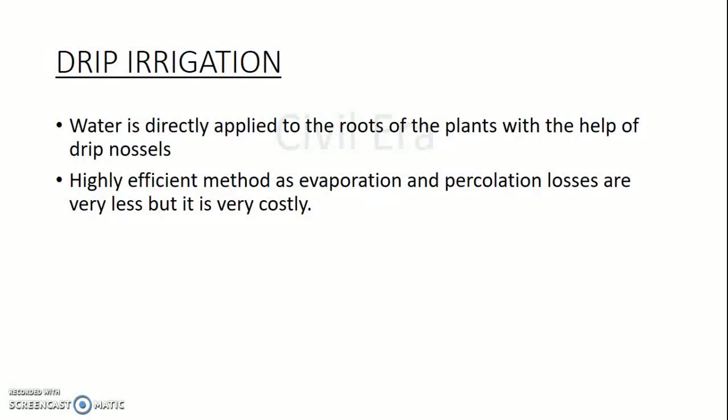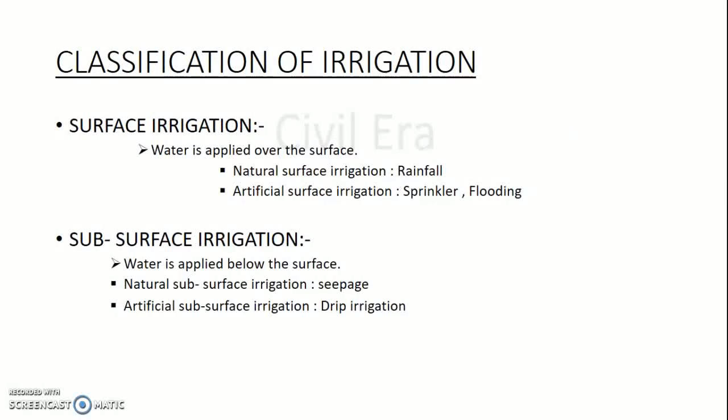In sprinkler or drip irrigation, water is distributed very efficiently; hence the efficiency of water distribution for sprinkler and drip irrigation is 100%. Moving on to the next topic: classification of irrigation. Classification of irrigation is done in two parts — surface irrigation and sub-surface irrigation. In surface irrigation, water is applied over the surface, done by natural surface irrigation (rainfall) or artificial surface irrigation (sprinkler or flooding). In sub-surface irrigation, water is applied below the surface — natural sub-surface irrigation (seepage) or artificial sub-surface irrigation (drip irrigation).